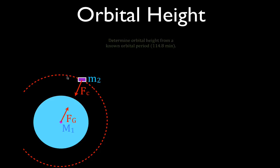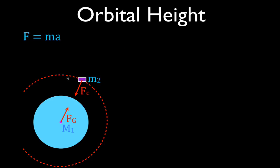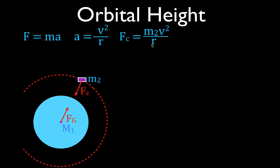We're going to use that idea to derive the equation for orbital height and then calculate it. Starting with centripetal force and Newton's second law, F = ma, when an object travels in a curved path the acceleration equals V² over R, so the centripetal force is M2·V²/R. The gravitational force from Newton's universal law of gravitation is G·M1·M2 divided by R², the square of the distance between the two objects.